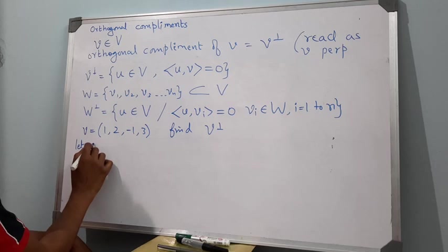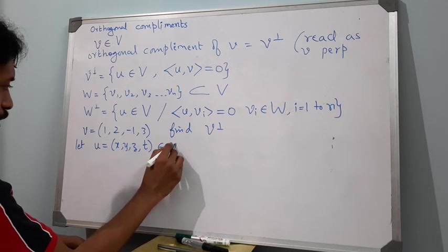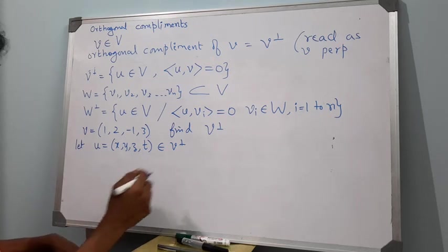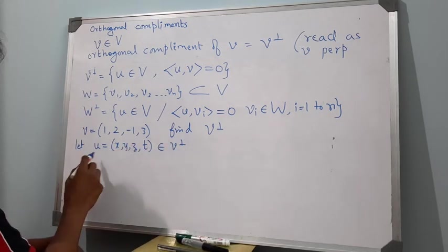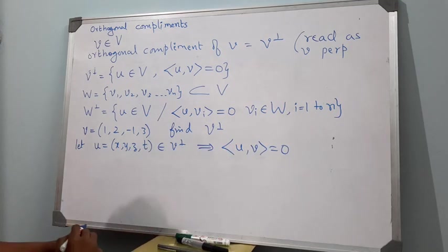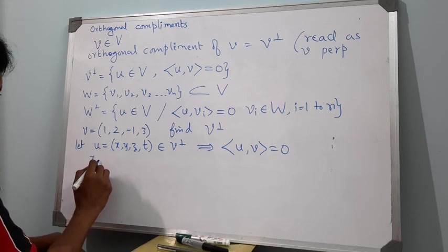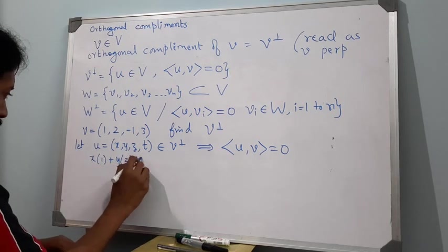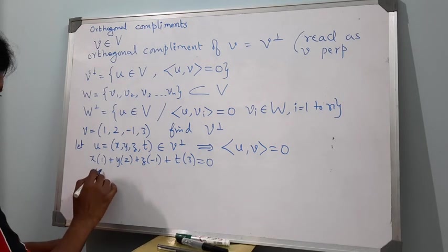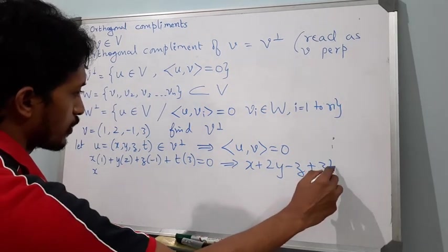Let u equal to (x, y, z, t) belong to v perp. We consider elements in R4 because v is an element in R4. Now u belongs to v perp implies inner product of u and v should be equal to 0. Since we have R4, it is the usual inner product. So x·1 + y·2 + z·(-1) + t·3 = 0, that is, x + 2y - z + 3t = 0.